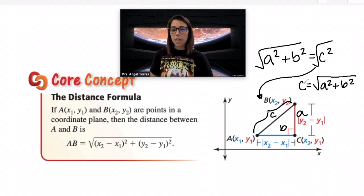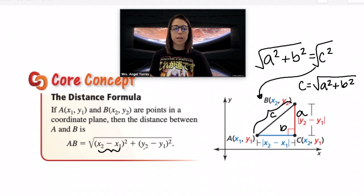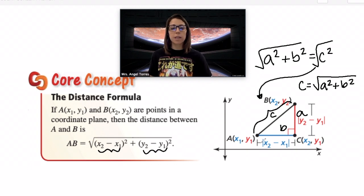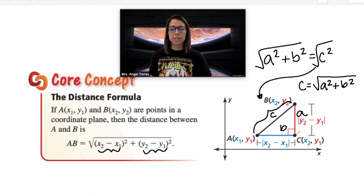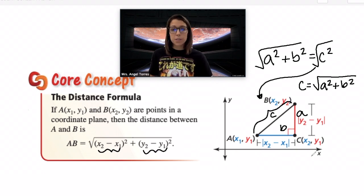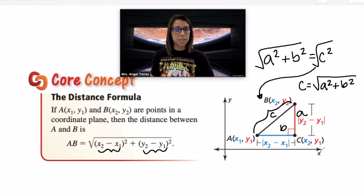In a coordinate plane, to find the lengths of these A and B sides, we have to do the difference of the coordinates. B would be the difference of the X values - so how far is X1 from X2? And A would be the distance of the Y values. This will make a little more sense when we get into our first example on screen 7 of the Desmos.